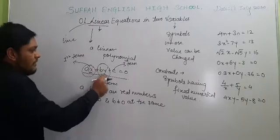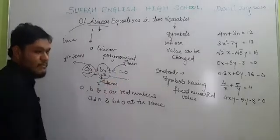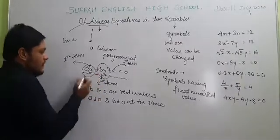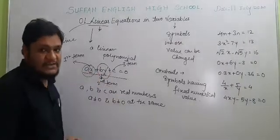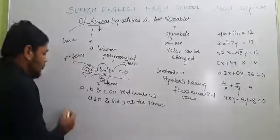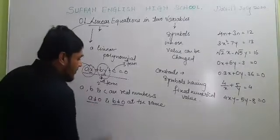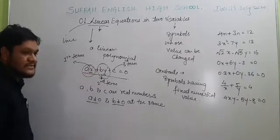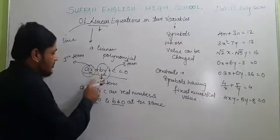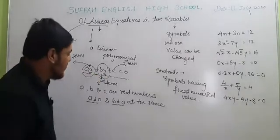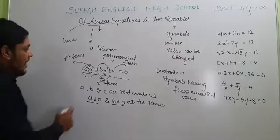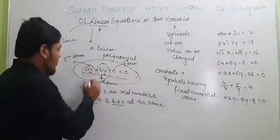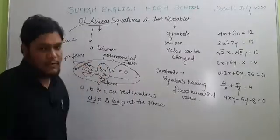If A = 0, then By + C = 0 is a linear equation, but in one variable. If B = 0, then Ax + C = 0 is also a linear equation in one variable. So you cannot make A and B both 0 at the same time. Remember, all linear equations can be converted to this standard form.